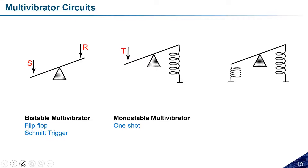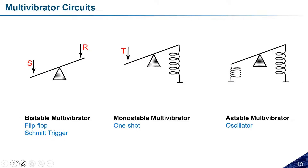The third kind is the astable multivibrator, which has two springs on both sides. After applying and releasing a force, both springs oscillate — there is no stable state. We call it the astable multivibrator. This concept is utilized in oscillators where we want to generate some frequency. So to summarize: flip-flops and latches are bistable; one-shot circuits are monostable; ring oscillators are astable.